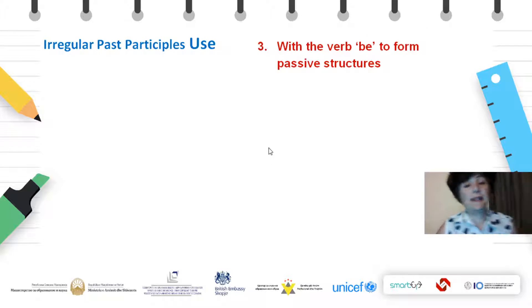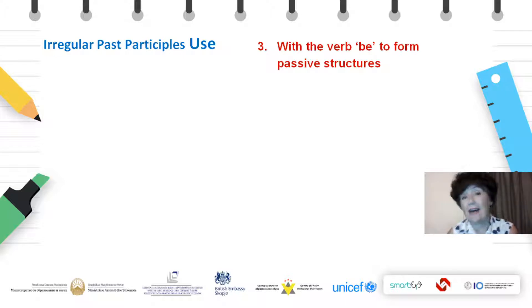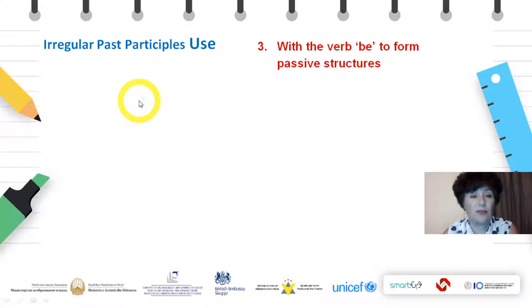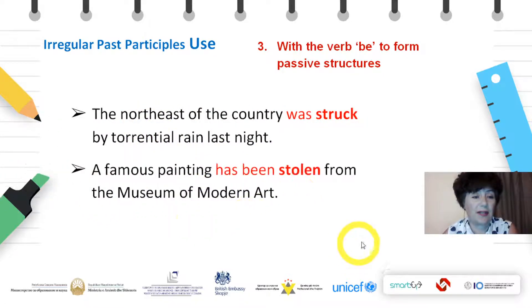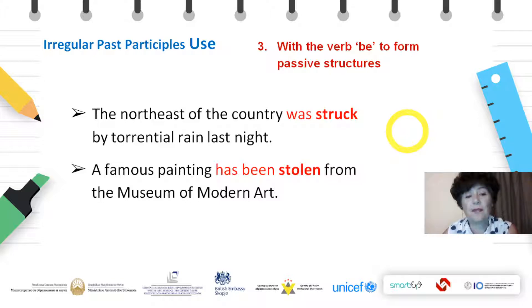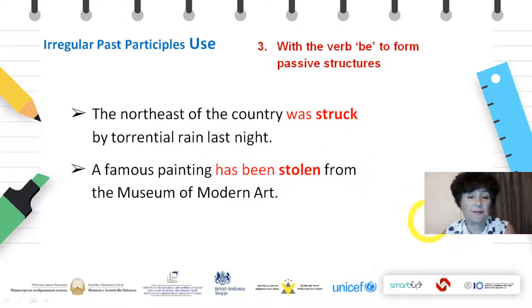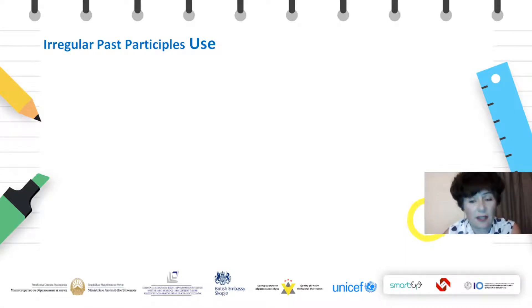The third use is for passive structures. But here, instead of combining the past participle with have, we use the verb be, and it decides whether the sentence will be in present, future, or past tense. Examples: the northeast of the country was struck by torrential rain last night. And: a famous painting has been stolen from the Museum of Modern Art. Here, be shows the structure is in past tense, and the second is a present perfect passive — both with irregular past participles.